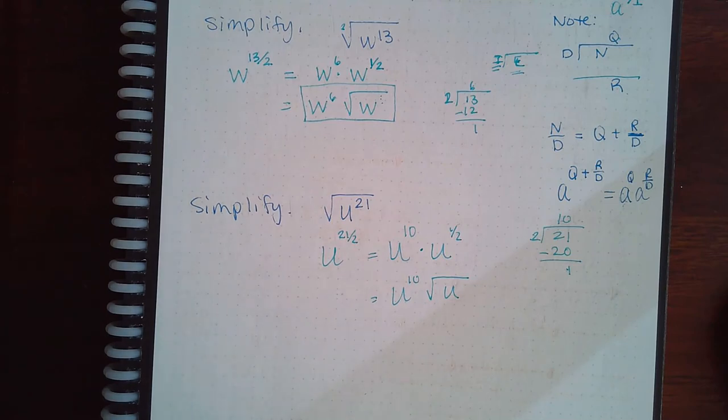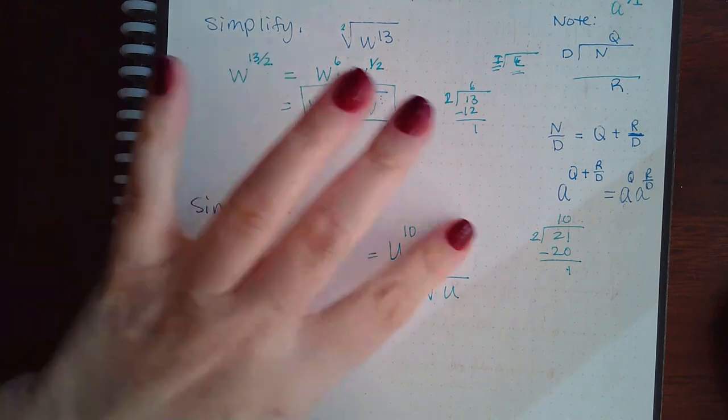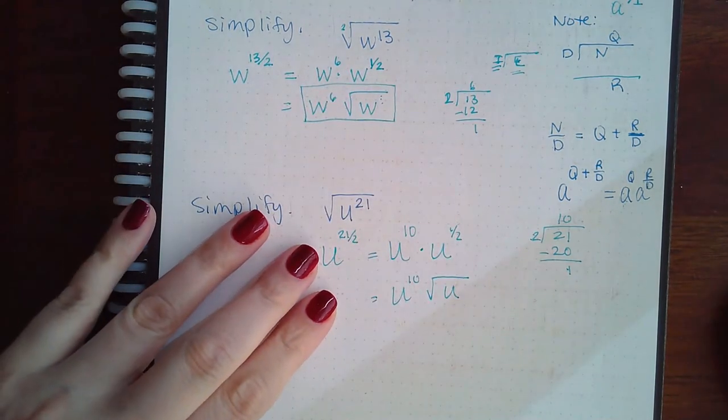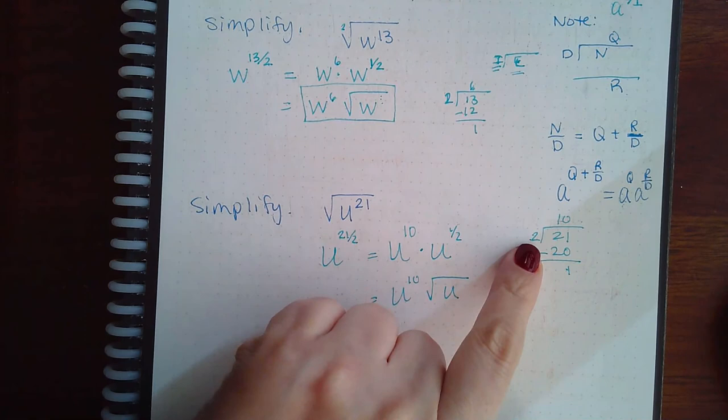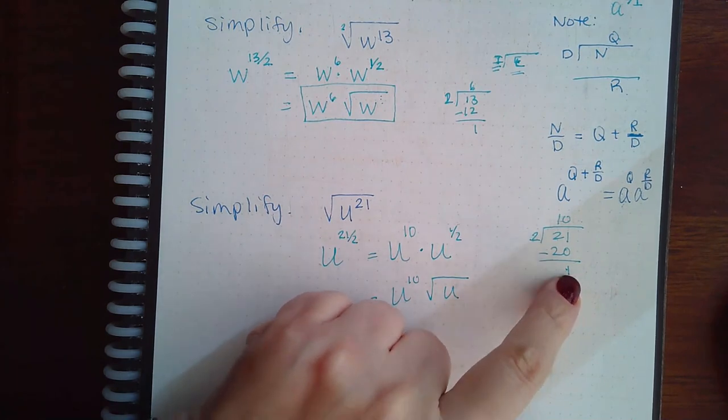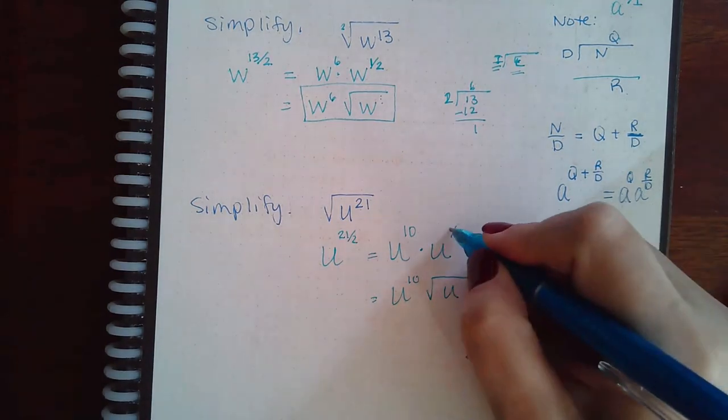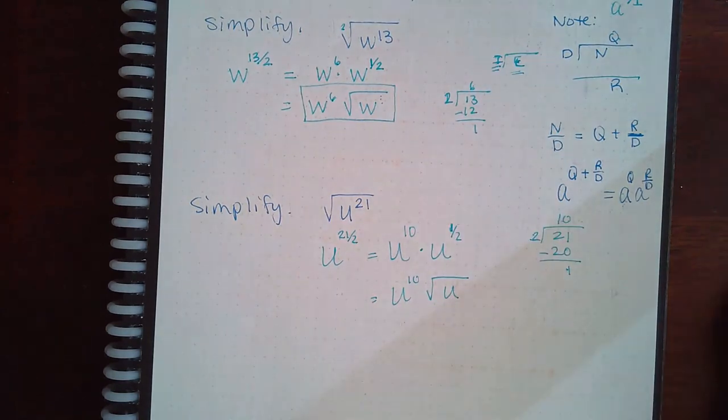If it was a cube root, everything is exactly the same. The only difference is that the denominator would be a three, so once you have your remainder it would be that remainder over that denominator, one over three in the end. I'm sure we will get to those types of examples eventually, so let's just keep going.